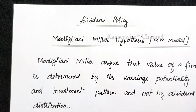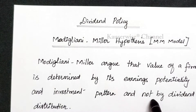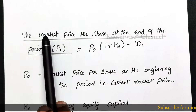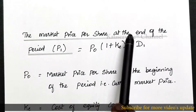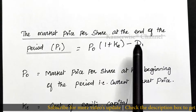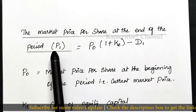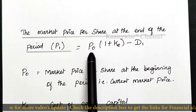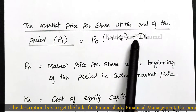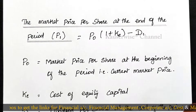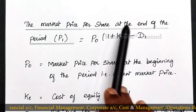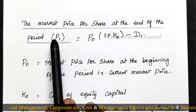We are going to see one numerical problem for better understanding of this concept. First, let us see the formula to find out market price per share at the end of the period, that is P1. The formula is: P1 is equal to P0 into 1 plus KE minus D1.